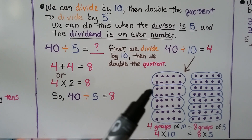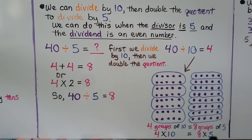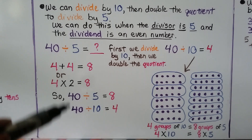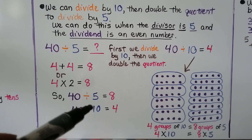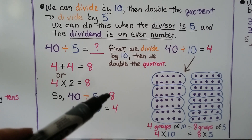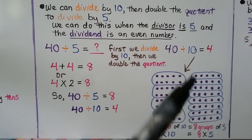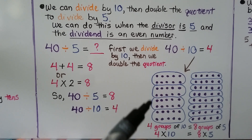We had 4 groups of 10, and we split them into 8 groups of 5. This 4 is half of that 8, and this 5 is half of that 10. Our dividend is the same, but since 5 is half of 10, its quotient is going to be double that of 10 — because we split it into more, smaller groups instead of fewer big groups.